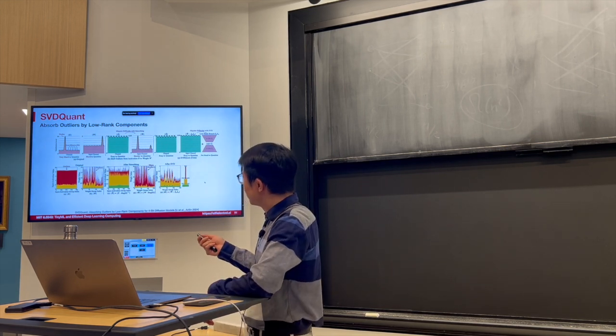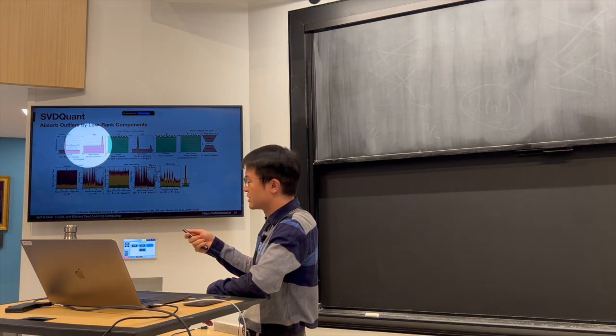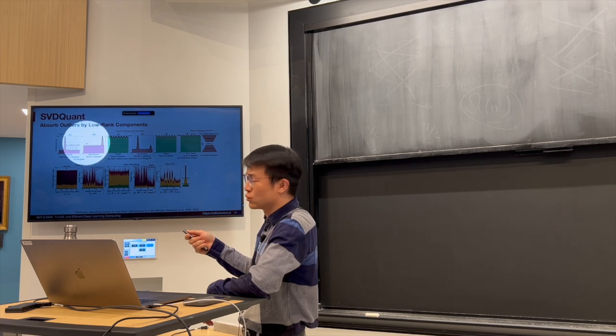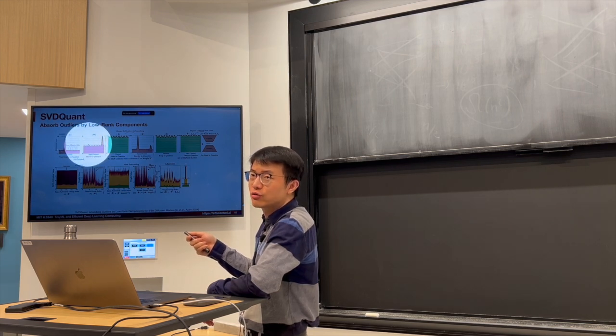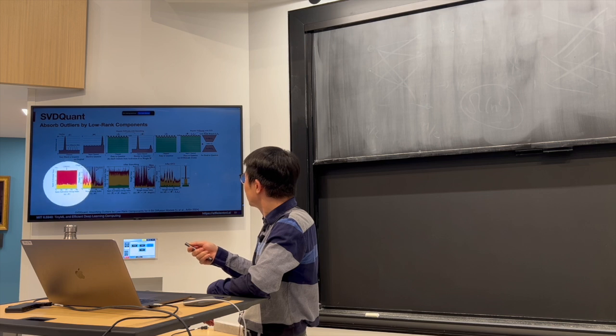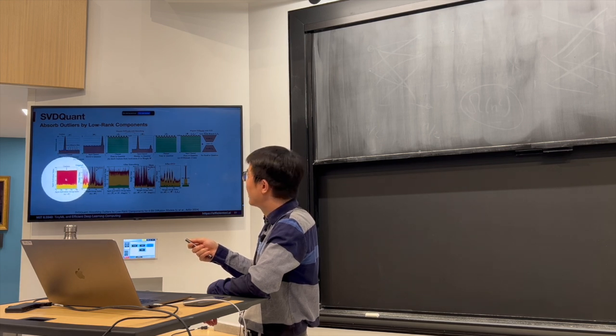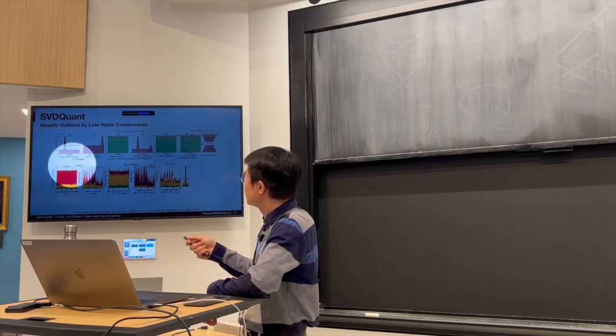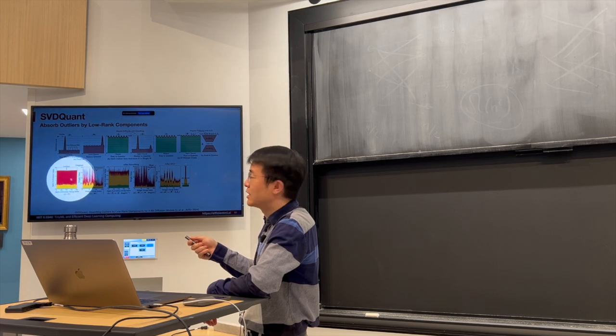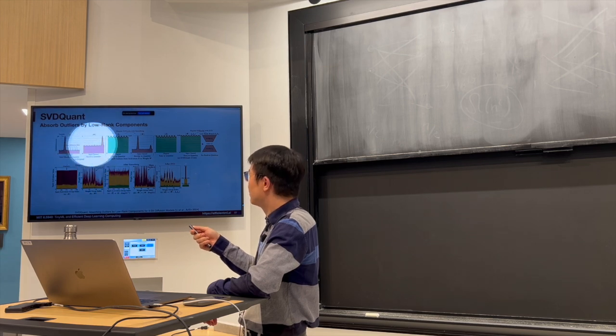So we observe the weight and activation both have a lot of outliers in diffusion models. We have seen this figure in SmoothQuant. So this is the distribution. The green is 50 percent percentile, the yellow is 99 percentile, and the remaining is the rest 1 percent. So the red part is the outlier. The activation has a lot of outliers right here, and the weight also has a lot of outliers, which makes it both difficult to quantize.